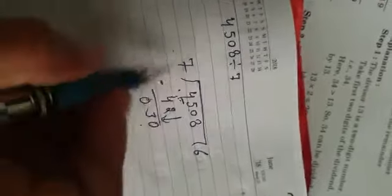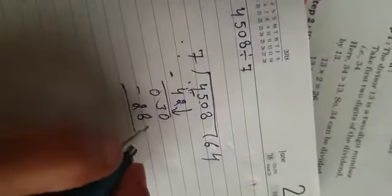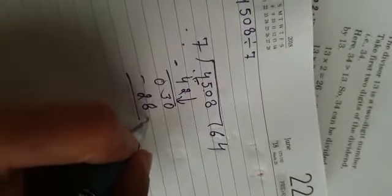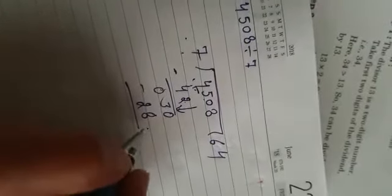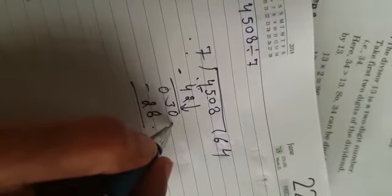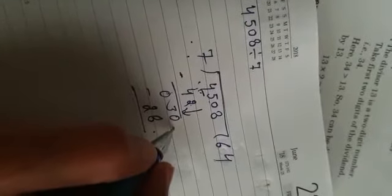0 comes here. Now check whether 30 comes in the table of 7 or not. 7, 4 are 28. Students listen once again you are allowed to write the smaller number. You cannot take the greater number. You cannot take 7, 5 are 35. You are not allowed to take 35. You have to take the smaller number.